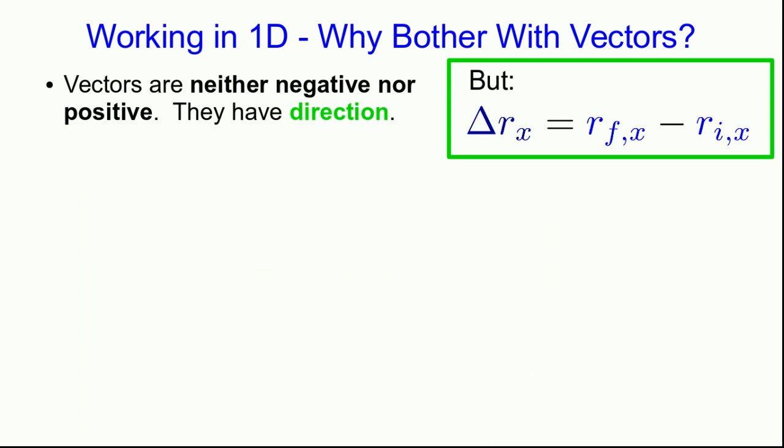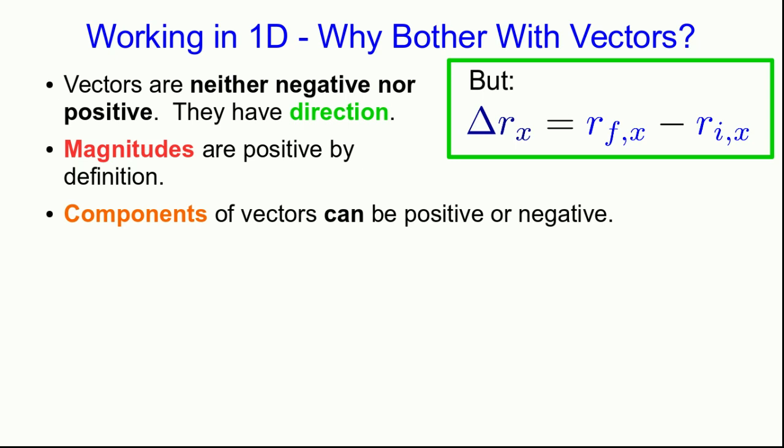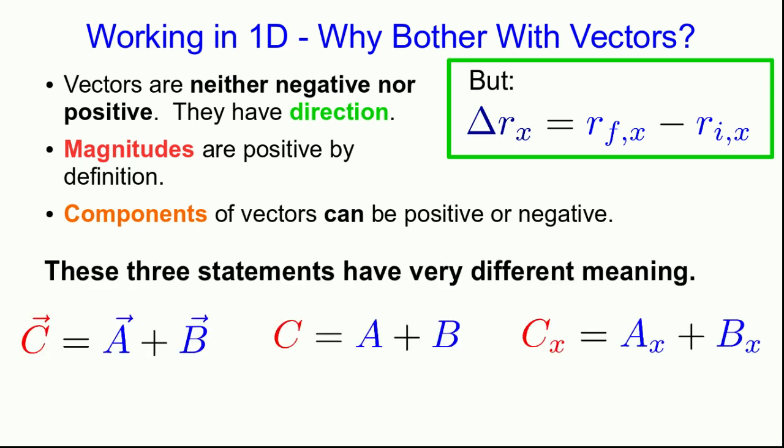In particular, notice vectors are neither negative nor positive. They have direction, and that's different from being negative or positive. Magnitudes though are always positive by definition, whereas components of vectors can be positive or negative. Keeping this straight will save you a lot of confusion later on. So for example, these three statements all have very different meaning. I encourage you, and this may be on a homework assignment, to draw some arbitrary vectors a and b and work out what each of these statements would mean in pictures.